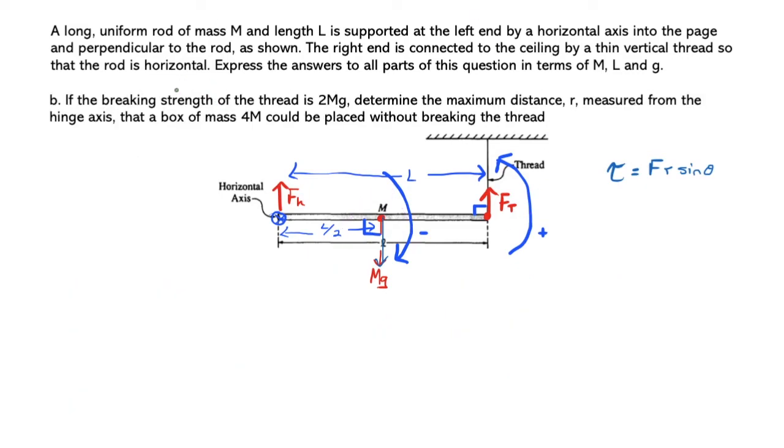Now for this slightly more interesting problem, although we have done a lot of important work already. If the breaking strength of the thread is 2Mg, determine the maximum distance R measured from the hinge axis that a box of mass 4M could be placed without breaking the thread. What we must do is pick a random place pictorially speaking to hang a box of mass 4M. It doesn't matter how far away I draw it—the point is it's an unknown radius from the hinge. I could draw it here, I could draw it there, it doesn't really matter, it's a variable and we're going to calculate what it should be symbolically.